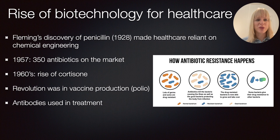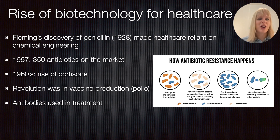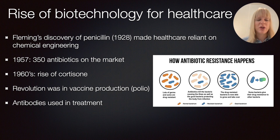After the First World War, applications for biotechnology in healthcare slowly began to emerge. One of the really important discoveries was Fleming's discovery of penicillin, which in a way made healthcare reliant on chemical engineering. This progressed very rapidly — by 1957, there were more than 350 antibiotics on the market.